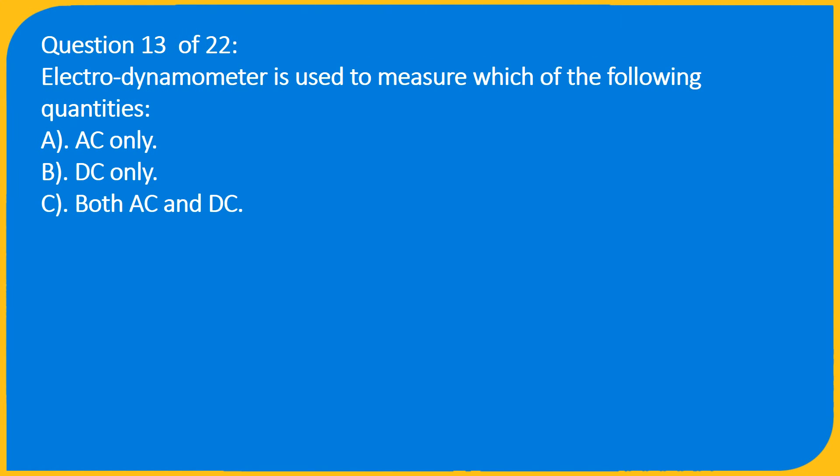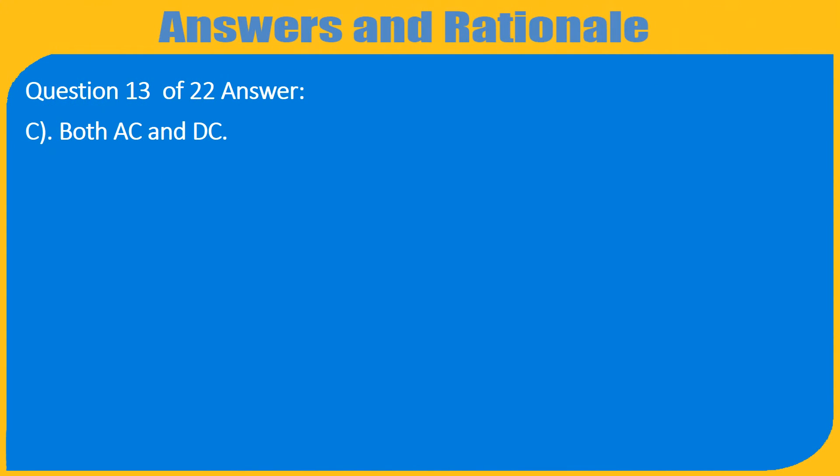Question 13 of 22: An electrodynamometer is used to measure which of the following quantities? A. AC only, B. DC only, C. Both AC and DC. Answer: C. Both AC and DC.